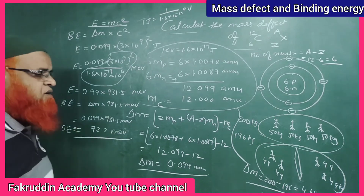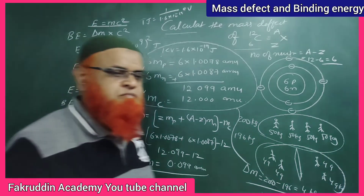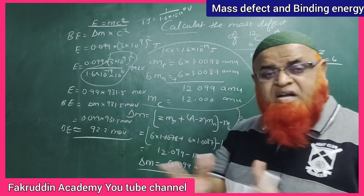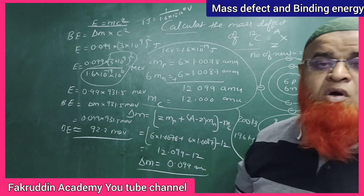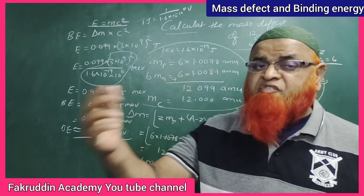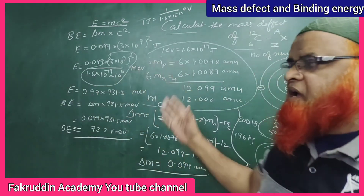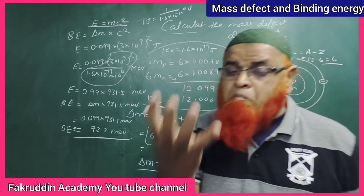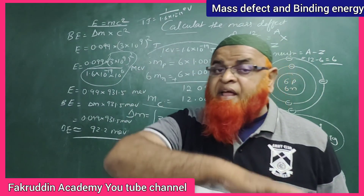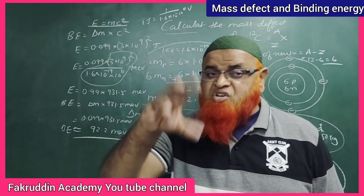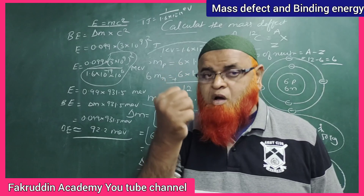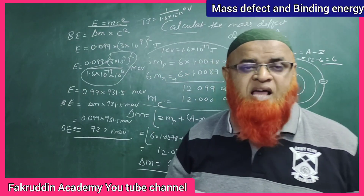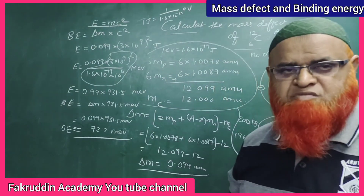This is called the binding energy — because to bind protons and neutrons together, some amount of energy is released. That is why the carbon atom's mass is less than the individually measured masses of its protons and neutrons. Hope you have enjoyed the class, thank you very much.